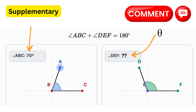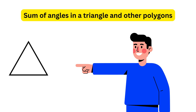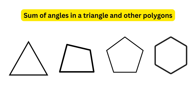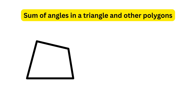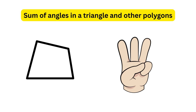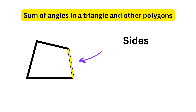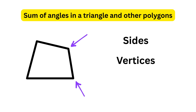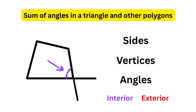Next, we have the sum of angles in a triangle and other polygons like quadrilateral, pentagon, hexagon, etc. Every polygon is made up of three main parts: sides — the straight edges forming the boundary; vertices — the corners where two sides meet; and angles — formed where two sides meet. Angles can be classified as interior, lying inside the shape, or exterior, formed on the outside when a side is extended beyond its vertex.